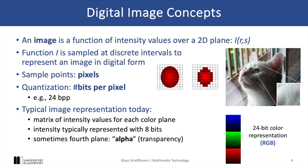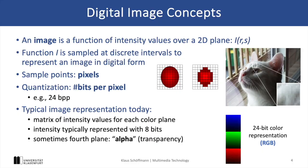The number of bits we use per pixel determines the precision with which we save the intensity. We can also think of a digital image as a pixel matrix, and the typical representation is a 24-bit color image.